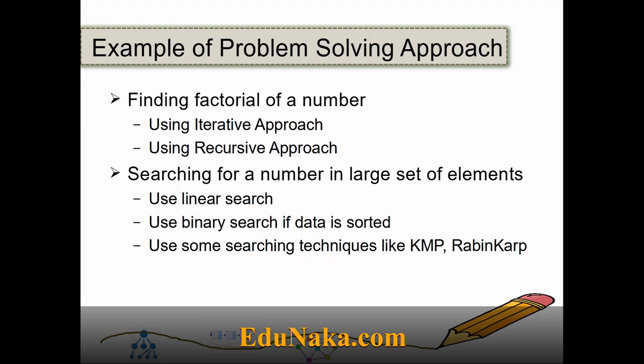Another example is searching for a number in a large set of elements. When searching for a number, we may use a linear search, or a binary search if data is already sorted, or we can make use of advanced searching techniques like KMP or Rabin-Karp. Which searching algorithm we choose depends on the type and size of data. We will see all these searching techniques and their pros and cons in upcoming videos.